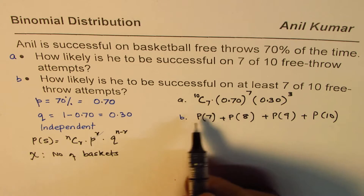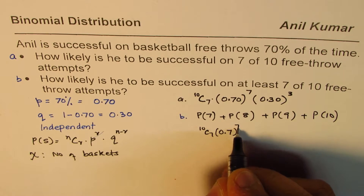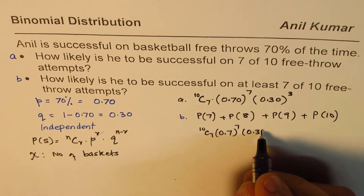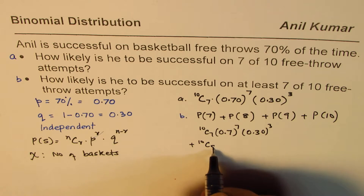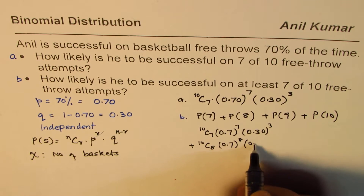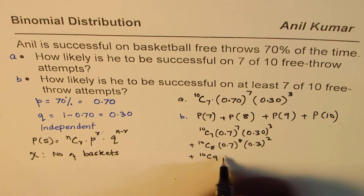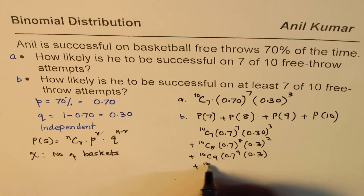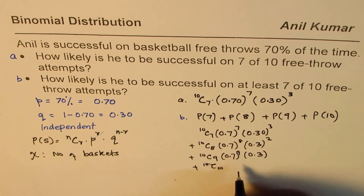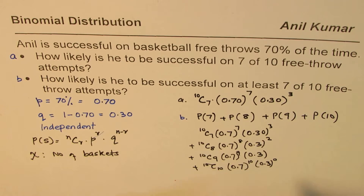Using the binomial formula for each value: 10C7 × 0.7^7 × 0.3^3, plus 10C8 × 0.7^8 × 0.3^2, plus 10C9 × 0.7^9 × 0.3^1, plus 10C10 × 0.7^10 × 0.3^0 — that last term is all baskets, a perfect score. The sum of all these terms gives you the answer for Part B.